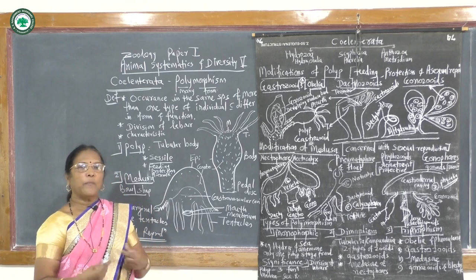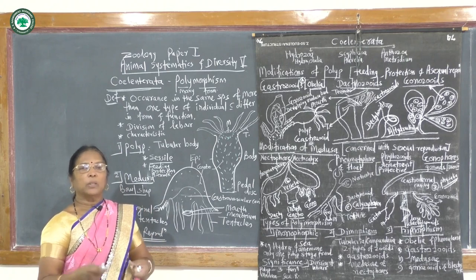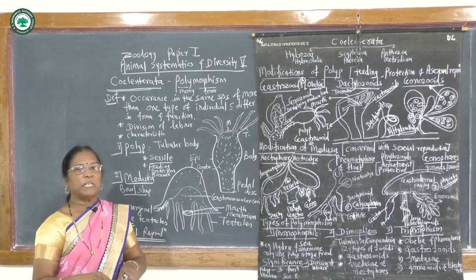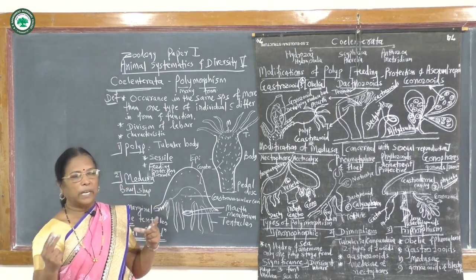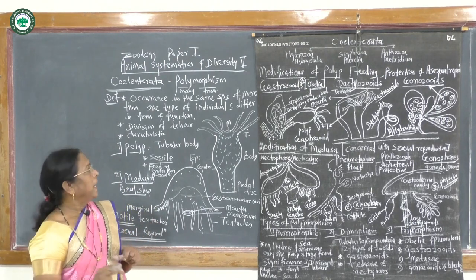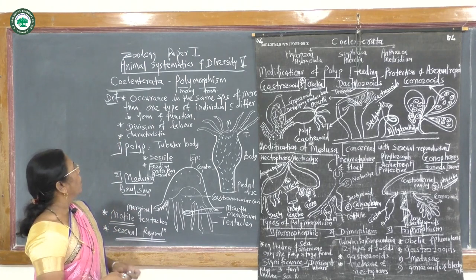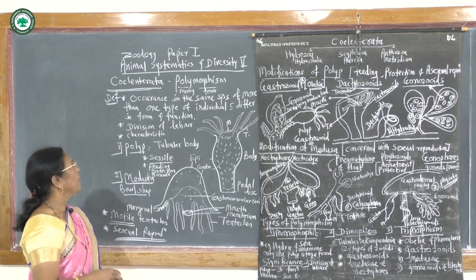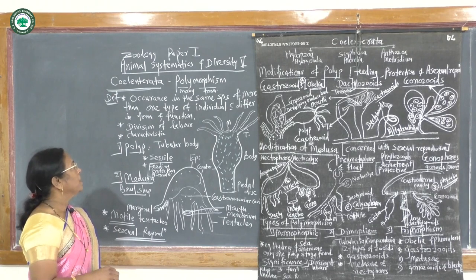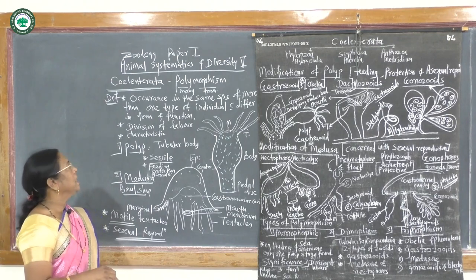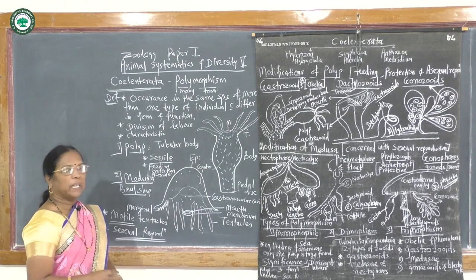Polymorphism means the occurrence of a number of individuals which are structurally and functionally different, but belong to the same species and form a colony, living together with division of labor. This polymorphism is a characteristic phenomenon found in Coelenterata, and it shows two basic forms or two basic zoids.